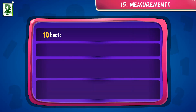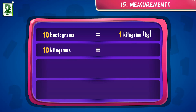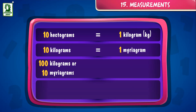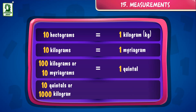10 hectograms is equal to 1 kilogram. And 100 kilograms is equal to 1 quintal. 10 quintals or 1,000 kilograms is equal to 1 tonne.